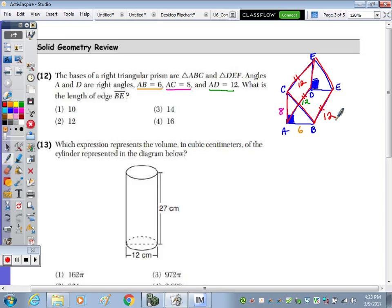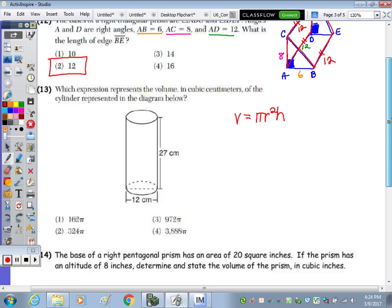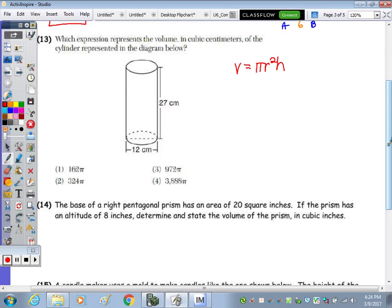So the answer to number 12 is 2. And number 13, which expression represents the volume in cubic centimeters of the cylinder represented below? Volume formula is pi R squared H. Given a diameter of 12, we have a radius of 6. So plugging it in, we have pi times 6 squared times 27, which gives us a product of 36 times 27 of 972 pi, which is answer choice 3.